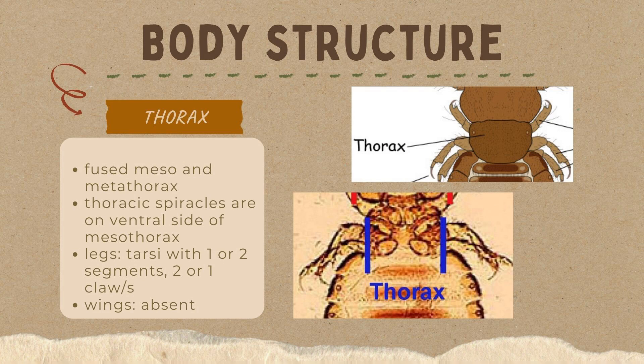For the thorax, they have indistinct segmentation. Their mesothorax and metathorax are fused, while their prothorax is distinct and separate. Their legs consist of one to two segments of tarsi, with one or two claws. From the word Phthiraptera in Greek, 'phthir' means lice and 'aptera' means wingless.